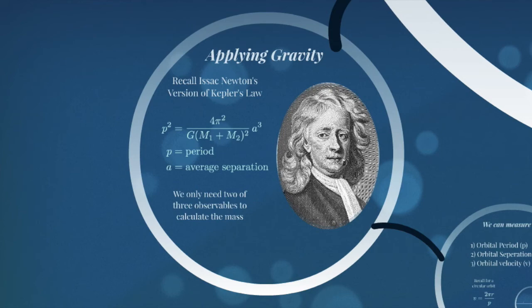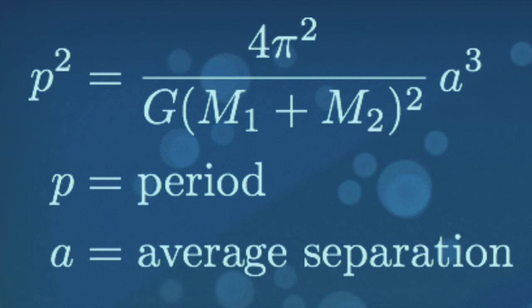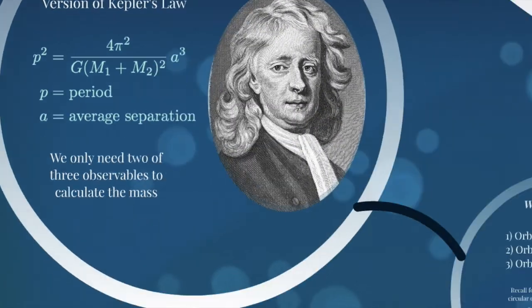So here, recall that we have the period squared is 4π squared over the gravitational constant, times the masses squared, times the separation cubed. So here, I have, if I can measure the period, I can measure the mass or the separation. I need two of the three of the variables to get the one I don't know. So if I can measure the period and the separation, I'm able to calculate the mass.